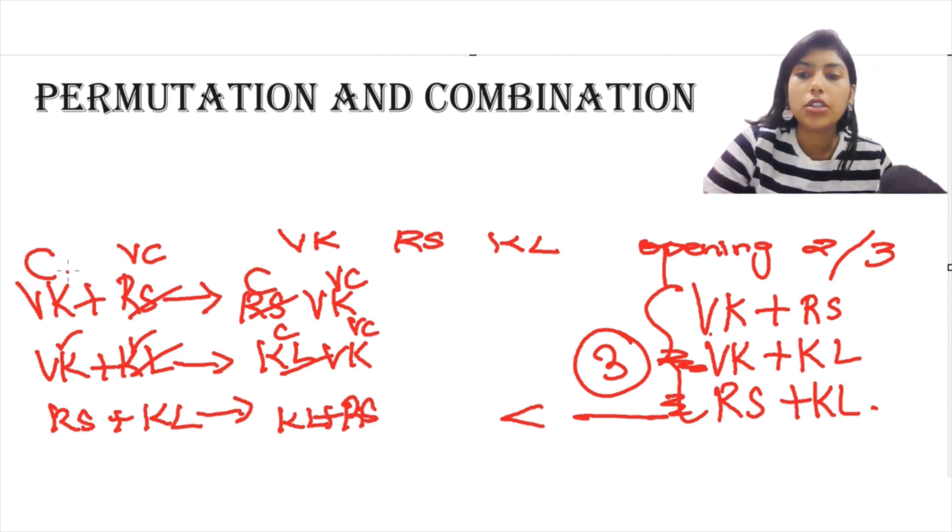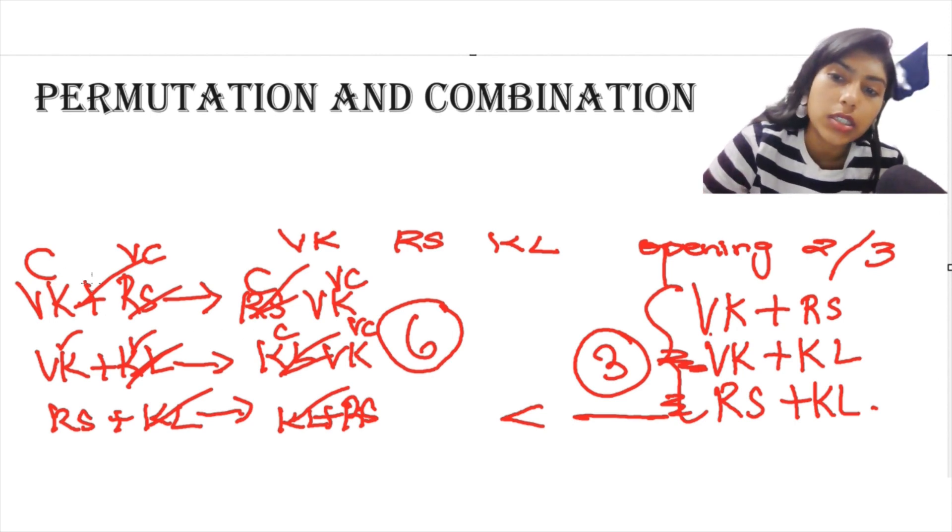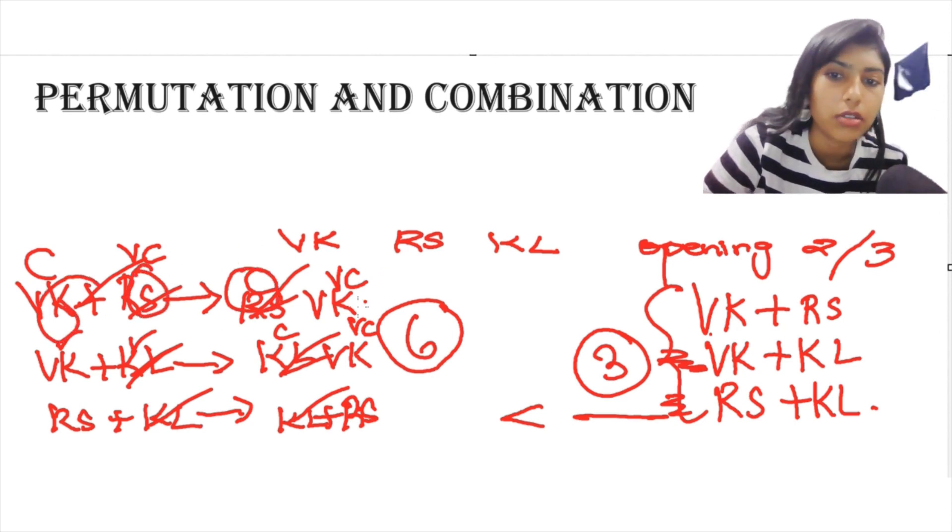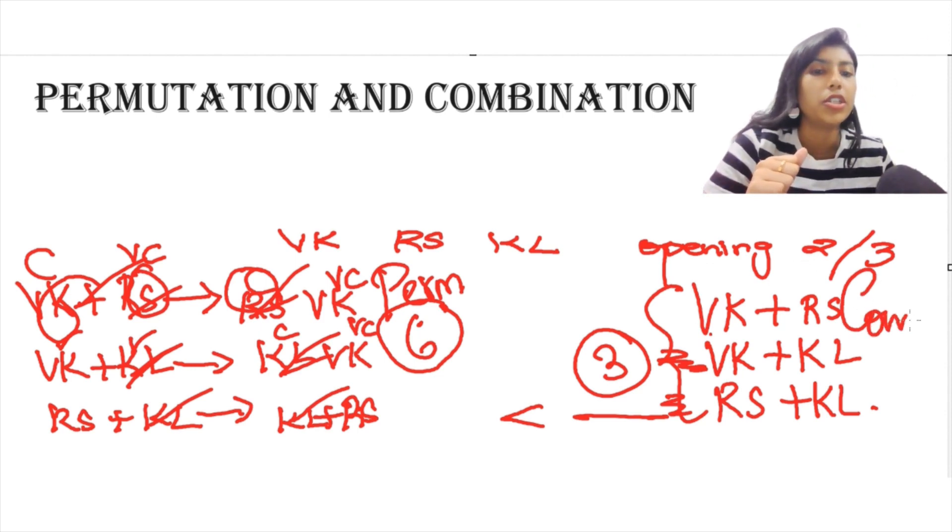And for the last one, I will also have two possibilities where Rohit Sharma is the captain and K.L. Rahul is the vice captain or K.L. is the captain and Rohit Sharma is the vice captain. Now, in total, I have one, two, three, four, five, six possibilities. Why six possibilities? Because the order of my selection played a role here. Whenever the order of your selection is going to play a role, that is when you go to permutation. But whenever your order of selection is not going to play any role, that is when you use combination.